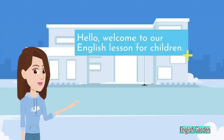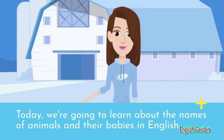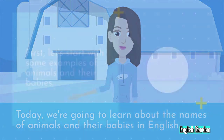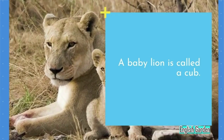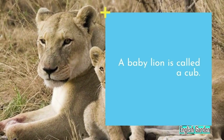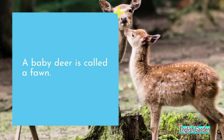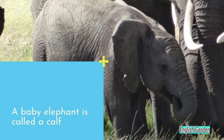Hello, welcome to our English lesson for children. Today we're going to learn about the names of animals and their babies in English. Let's start with some examples. A baby lion is called a cub. A baby deer is called a fawn. A baby horse is called a foal. A baby elephant is called a calf. A baby bear is called a cub.